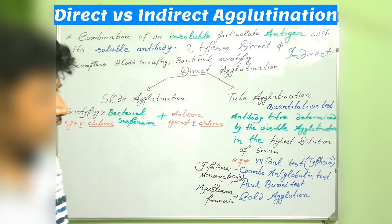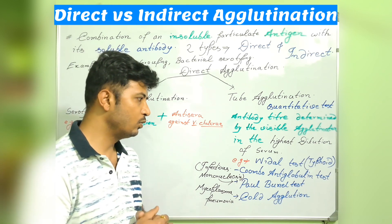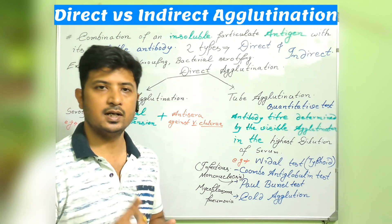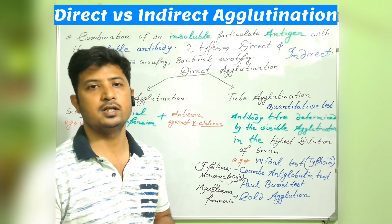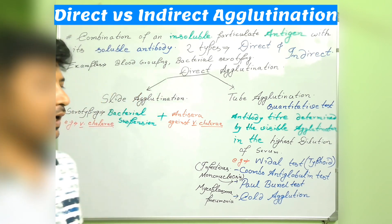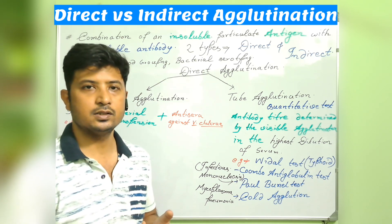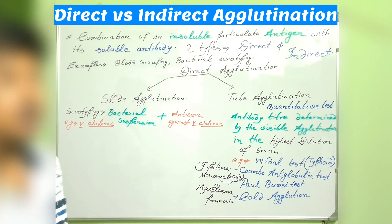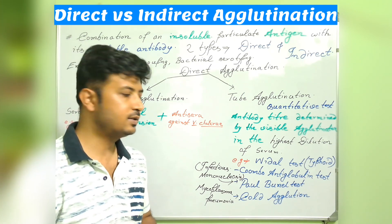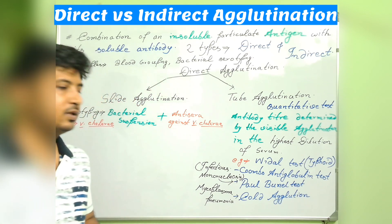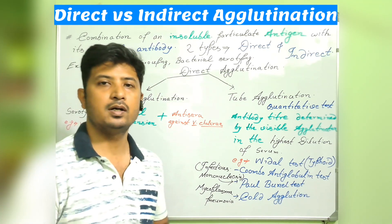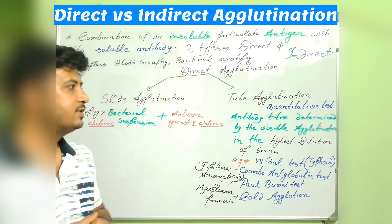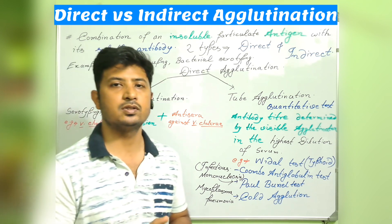Common examples of tube agglutination include the Widal test, Coombs antiglobulin test — performed for mothers who are Rh negative but bear an Rh positive baby — and immunological reactions that can be detected by this method. The Paul-Bunnell test is used for infectious mononucleosis, and cold agglutination is employed for Mycoplasma pneumonia. The antibody titer is determined by the visible agglutination at the highest dilution of the serum.